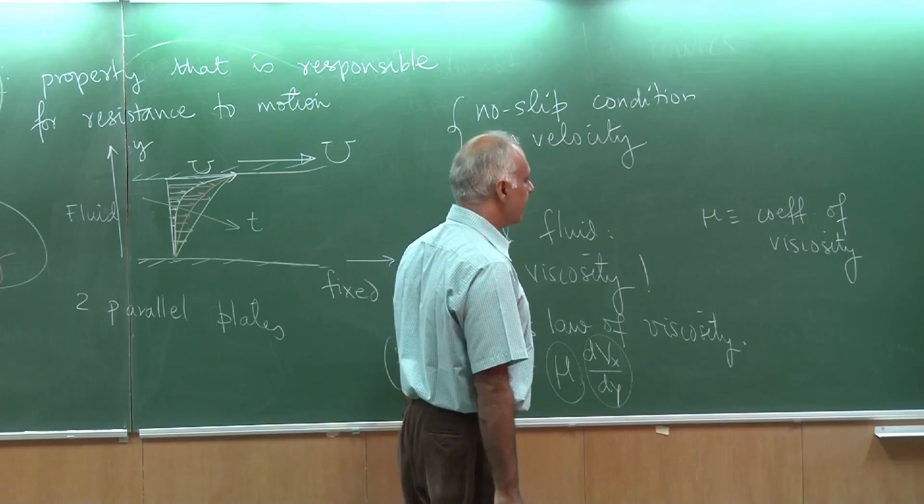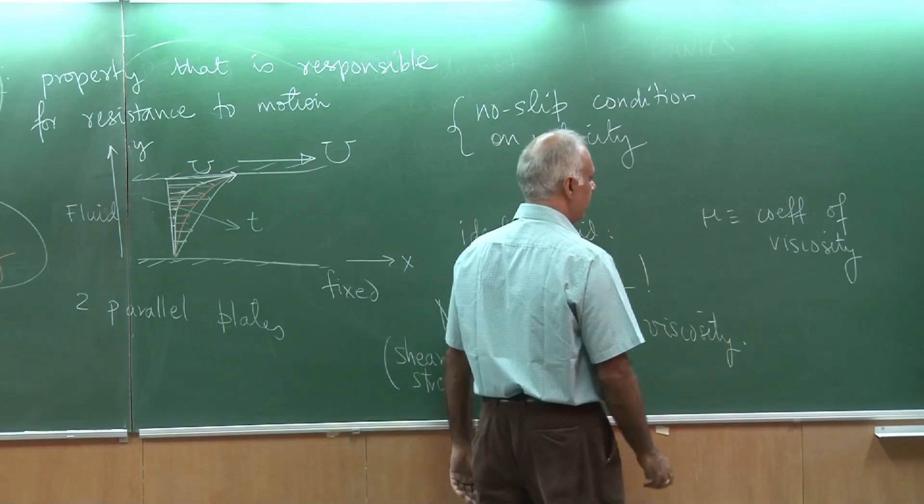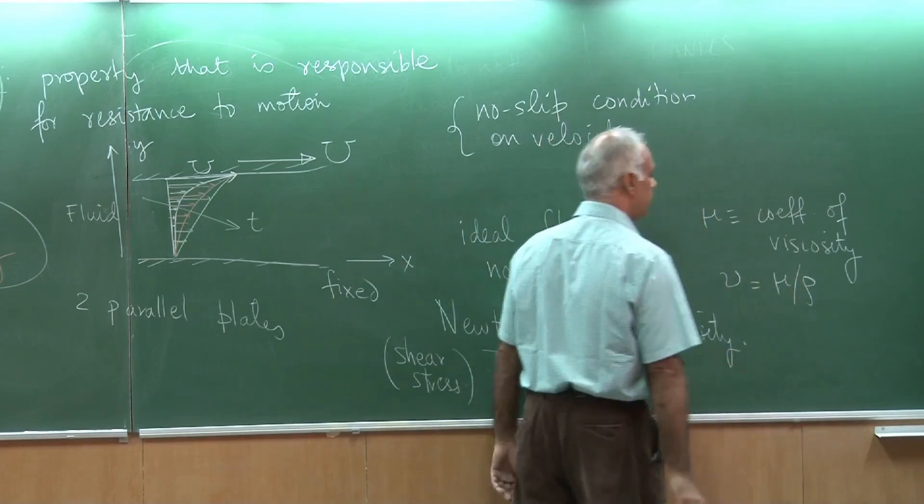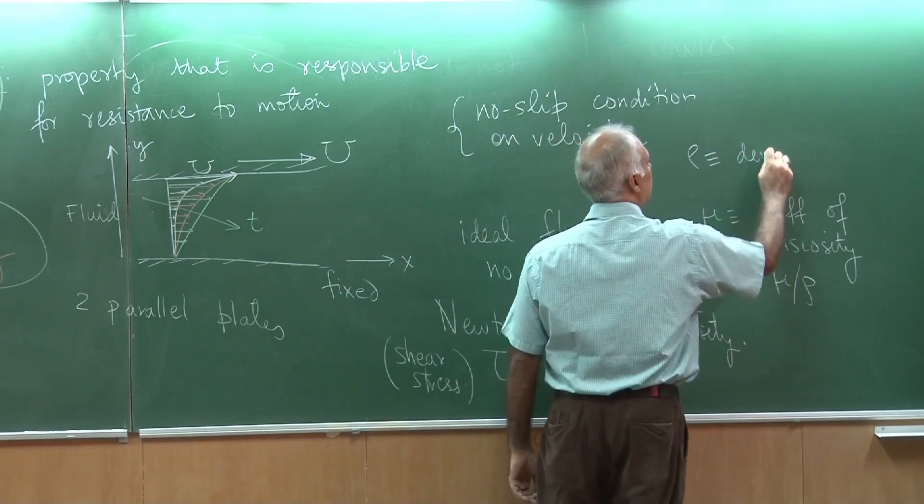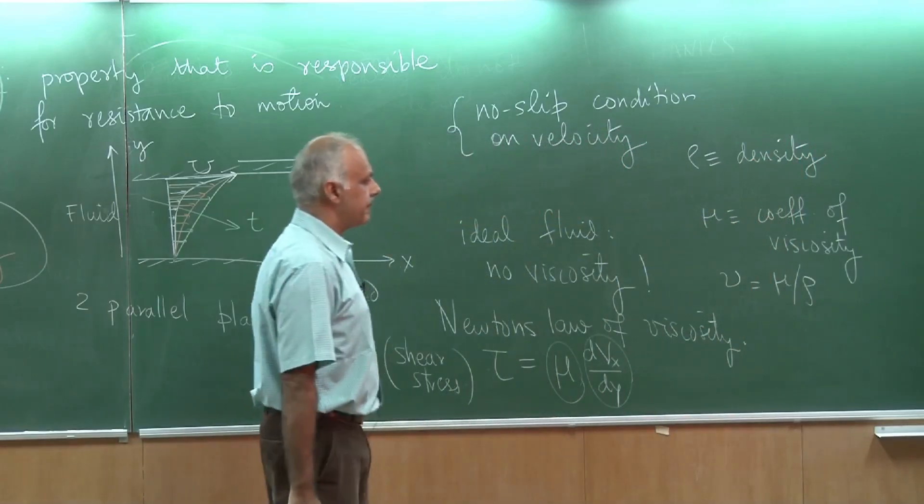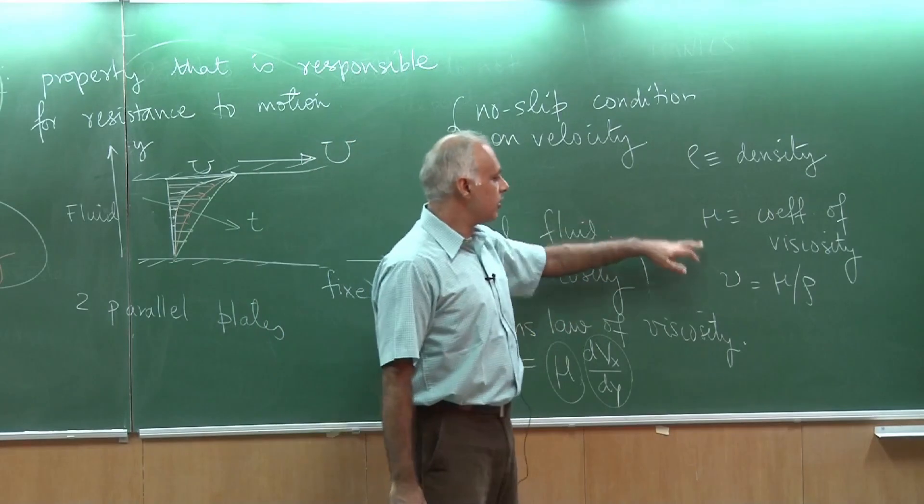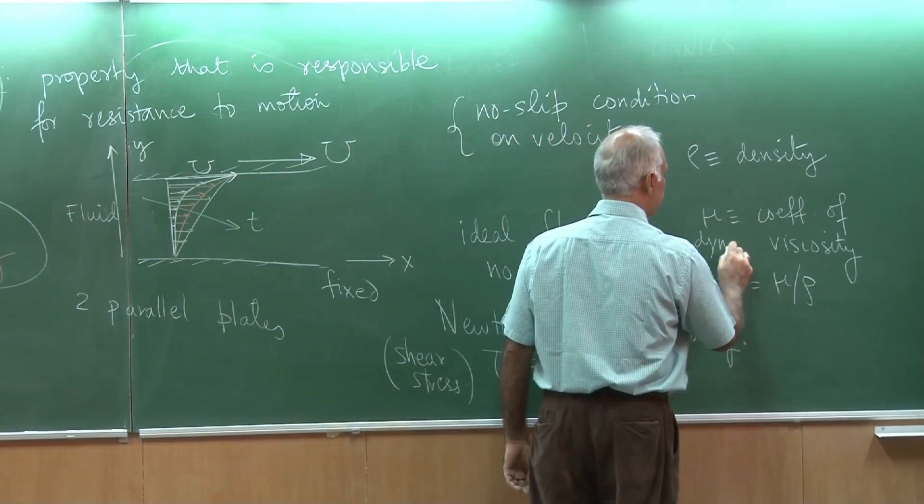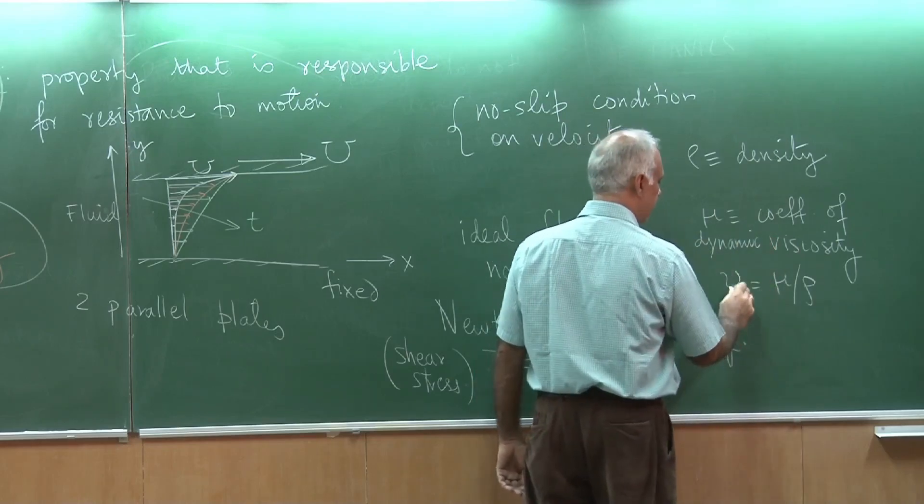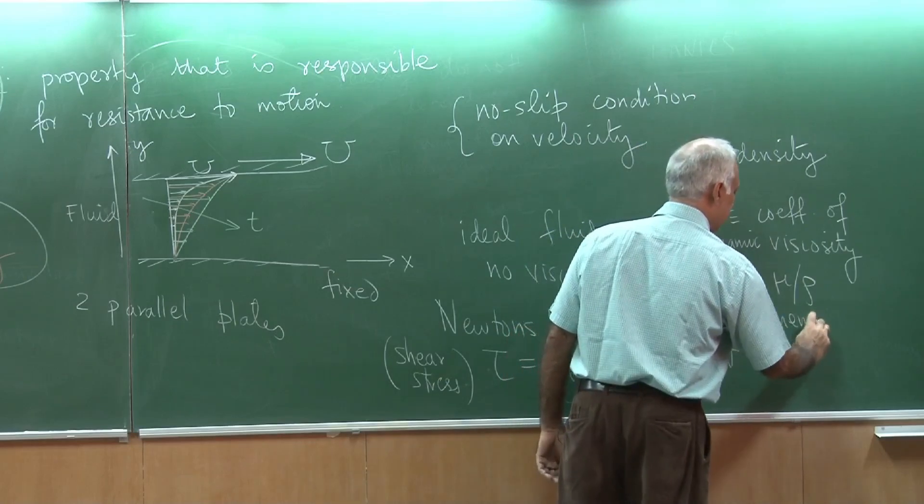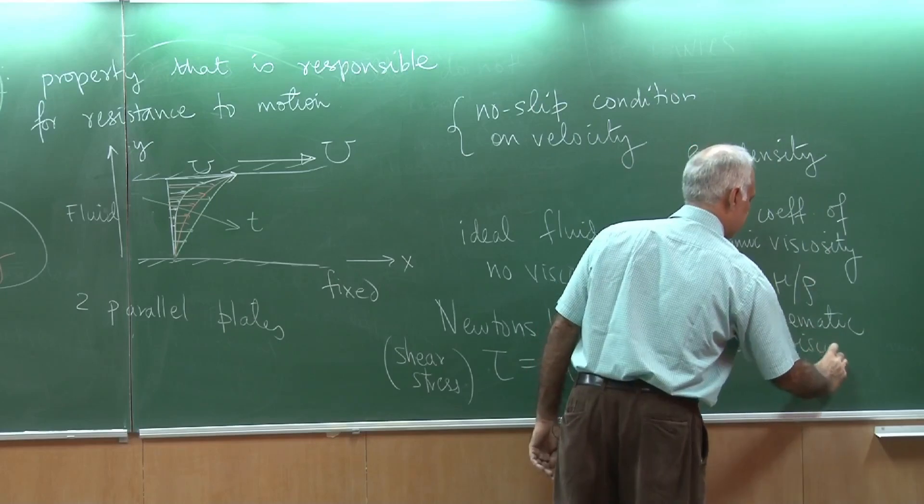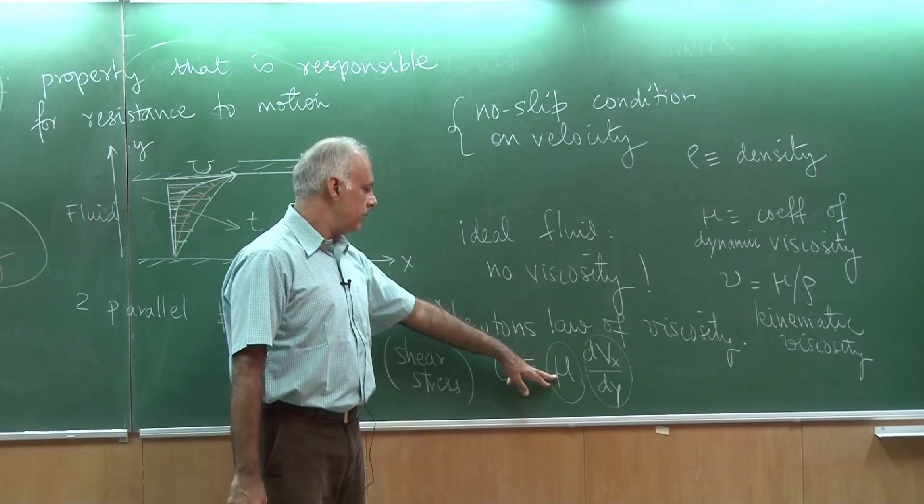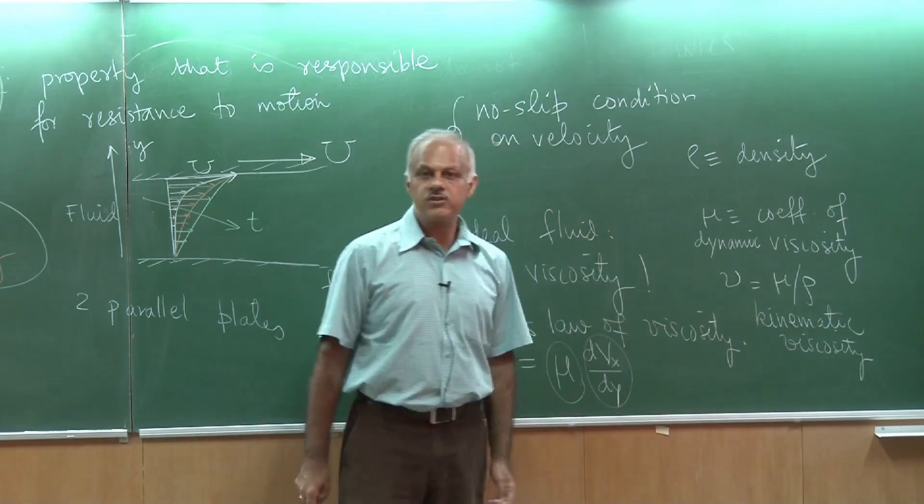Some people are interested in a quantity called mu by rho. I would like to make a distinction. There is another viscosity coefficient which is called mu by rho, where rho corresponds to the density. Mind you, both these are called coefficients of viscosity, but they have different names. This one is the coefficient of dynamic viscosity, whereas mu by rho is the kinematic viscosity. In Newton's formula, mu is the more primary one, but we will see later that nu is also an important quantity.